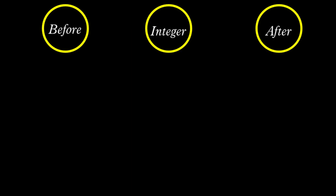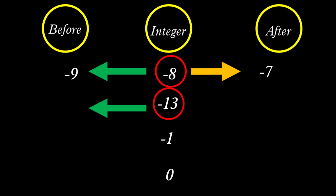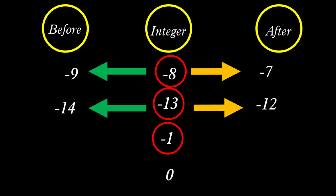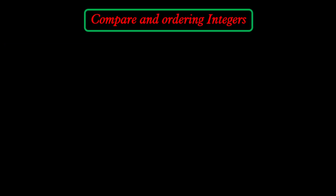Now ask yourself: what is the integer before and after a given value? For the set containing negative 8, negative 13, negative 1, and 0: the integer before negative 8 is negative 9, because negative 9 is to the left of negative 8. The integer after negative 8 is negative 7. Before negative 13 is negative 14; after negative 13 is negative 12. Before negative 1 is negative 2; after negative 1 is 0. Zero lies between negative 1 and 1, so before 0 is negative 1 and after 0 is 1.